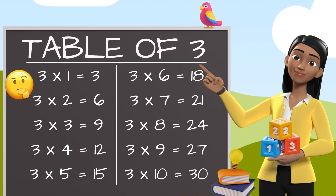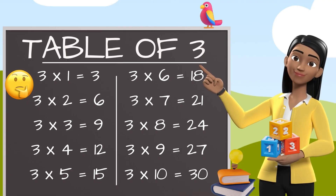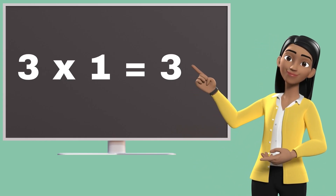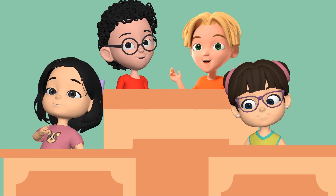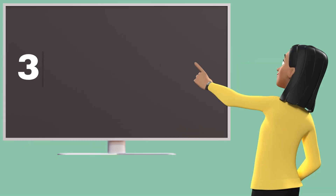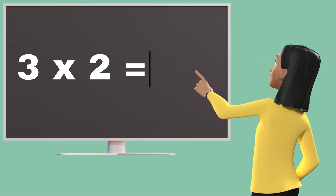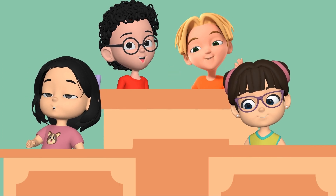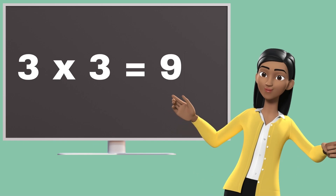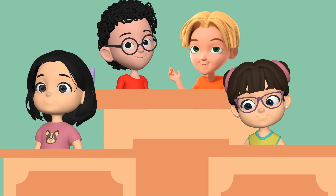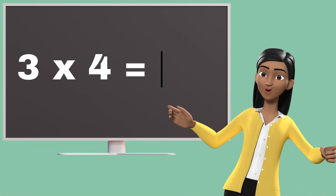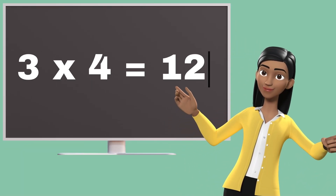Table of 3. Three ones are three. Three ones are three. Three twos are six. Three twos are six. Three threes are nine. Three threes are nine. Three fours are twelve.